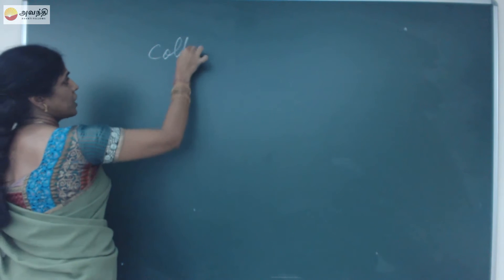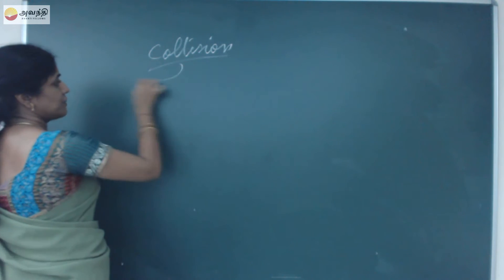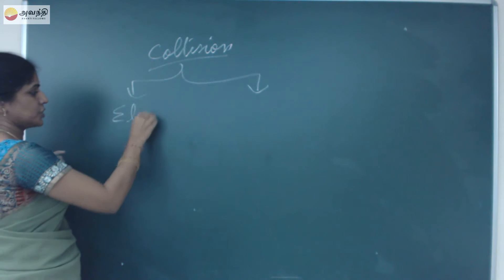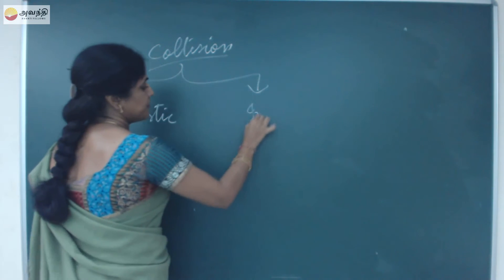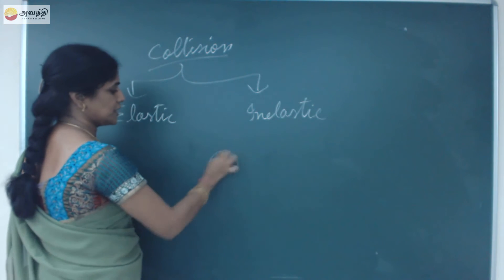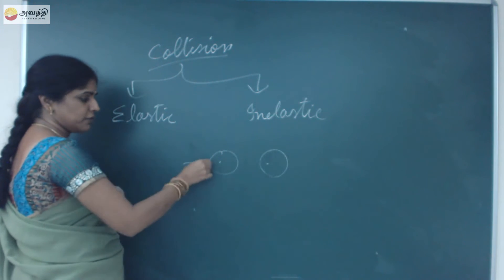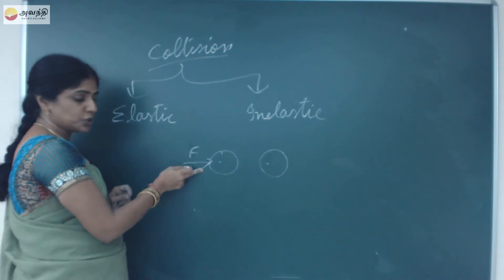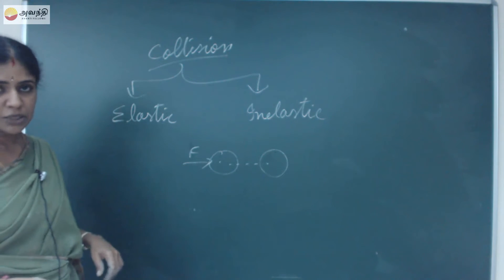The collision is the first thing about collision. There are two types of collision: one is elastic collision and the other one is inelastic collision. Collision means when there are two objects — if I give a force to this first object, it will hit the other object. That's why we call it a collision.